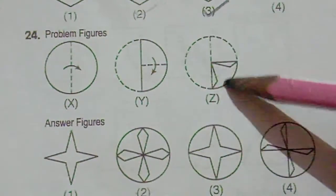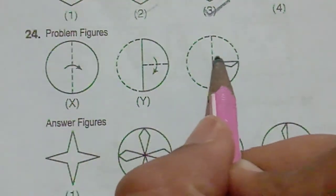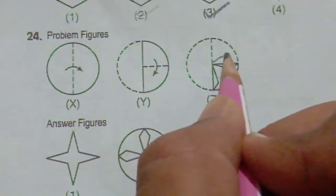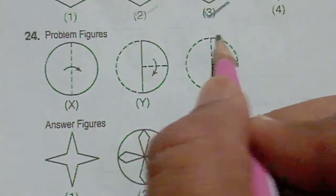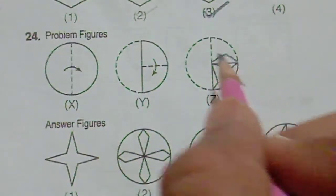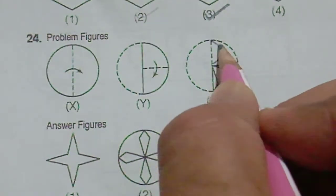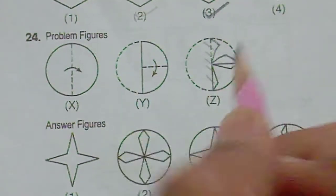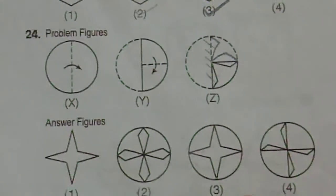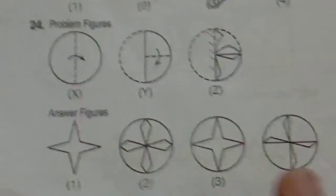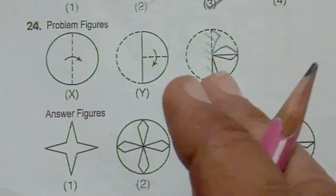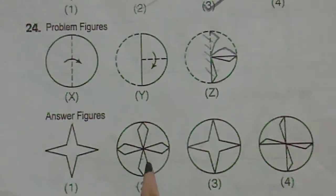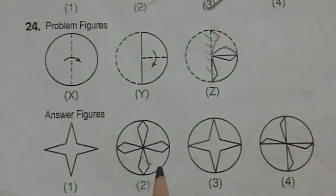How will it go as a mirror image? It will happen like this — it will go straight. And at the same time it should be like this. After this we have to think of this as a mirror image, so this part will come here. By observing the answer figures, the second one is the answer. I hope you understood this one.